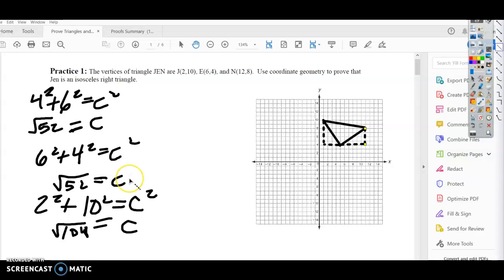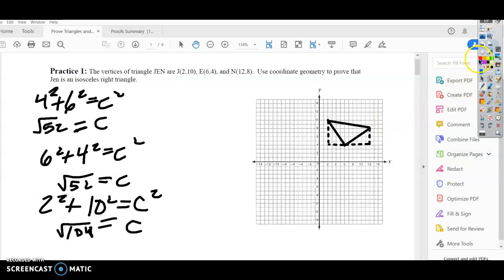Distance formula is good as well, but I just wanted to show you a different thing here. The other side, I went ahead and solved by going up 2 and over 10. So 2 squared plus 10 squared equals c squared. I don't really need that side. What I need to know is that these are both the square root of 52. You can simplify those and break it down into a simpler form, but basically, what we need to know is that these two sides are congruent. So this is an isosceles triangle.